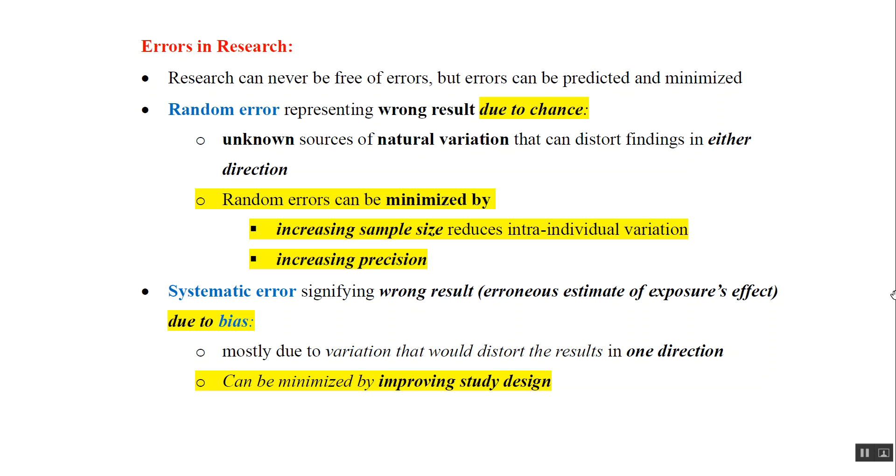Errors in research: Research can never be free of errors, but errors can be predicted and minimized. There are two kinds of errors which we commonly see in any research: first is random error and second is systematic error.